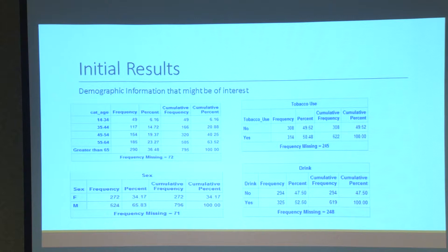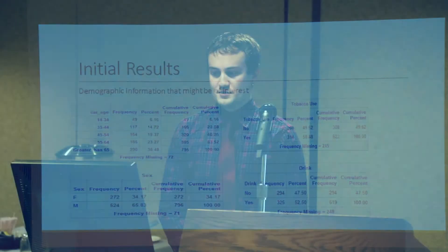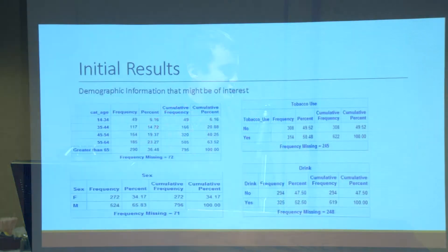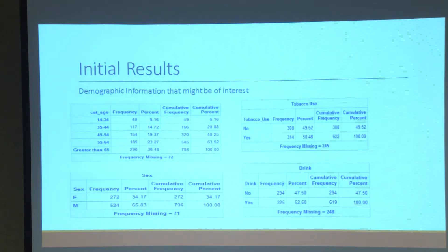Esophageal cancer is a lot more prevalent in men than women — it's the third most common cancer in men but the fifth most common in women. This is generally consistent with what Jamie also found in terms of sex distribution. Tobacco use was also a lot higher than you would expect given the national prevalence rate, which is around 13% of men and 1% of women reporting smoking.